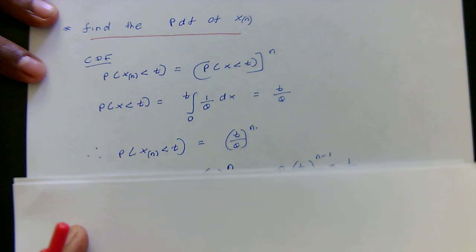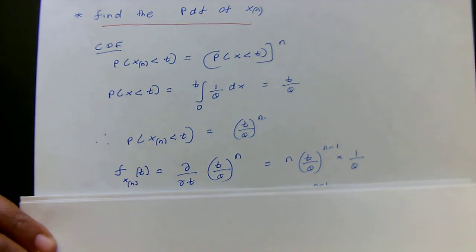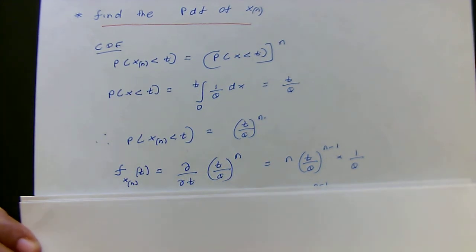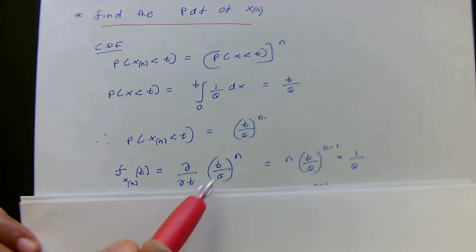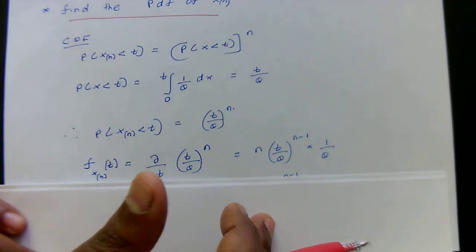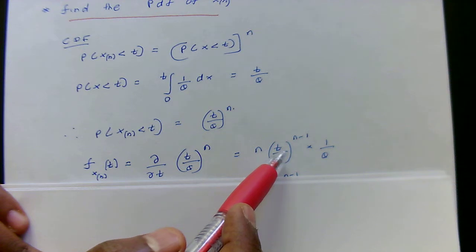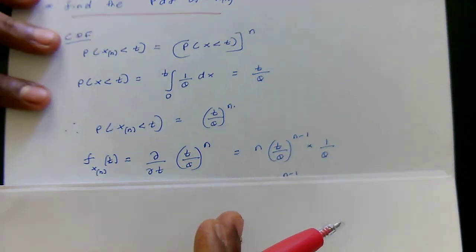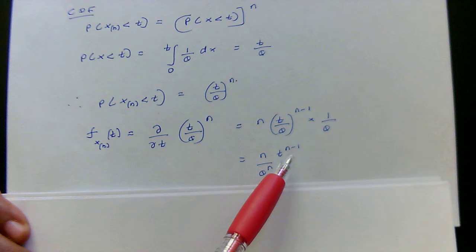Knowing the CDF, I can find the PDF by taking its first derivative. The PDF of the largest order statistic is the derivative of (t/θ)^n with respect to t. Applying the chain rule gives n·(t/θ)^(n−1)·(1/θ), which simplifies to (n/θ^n)·t^(n−1).